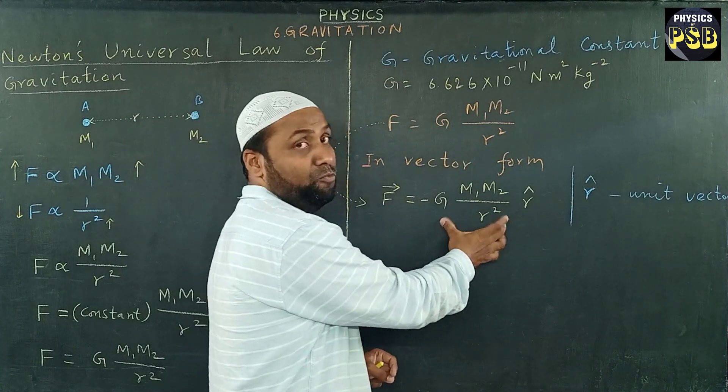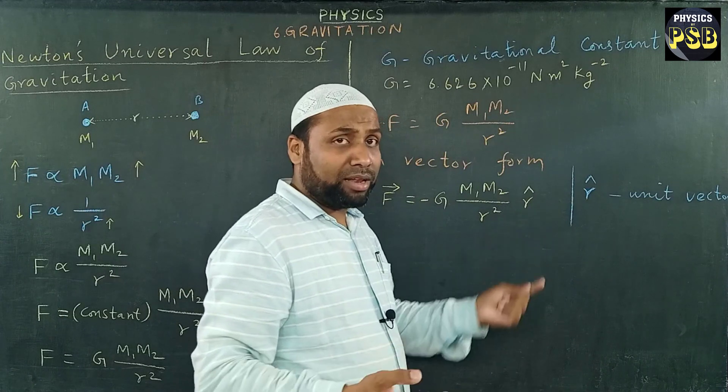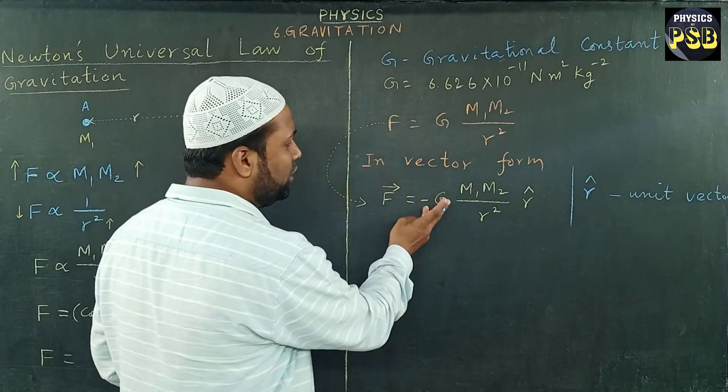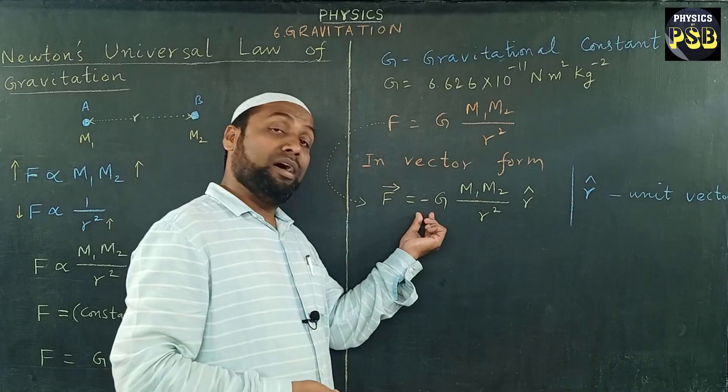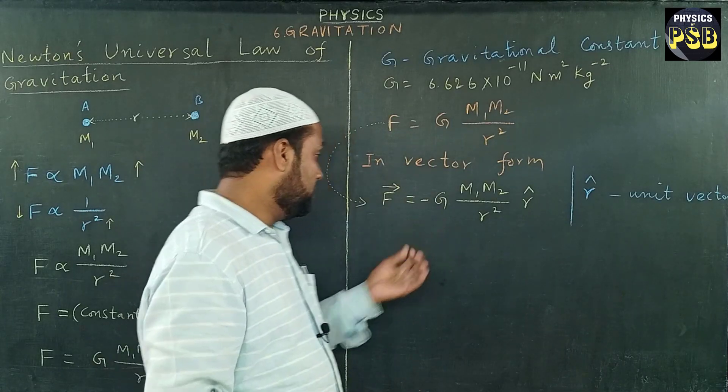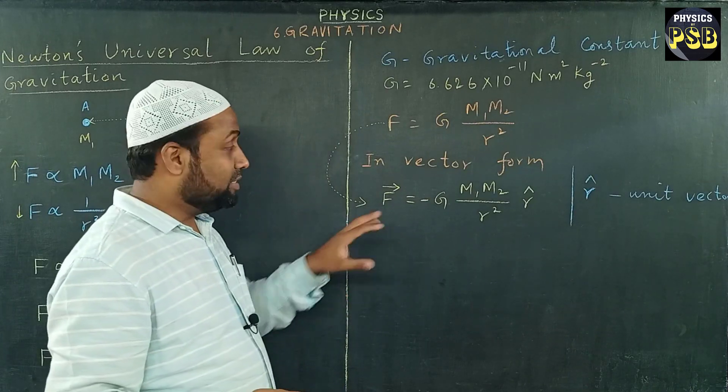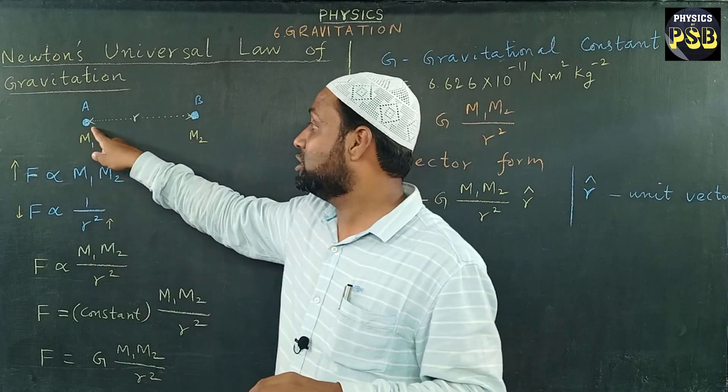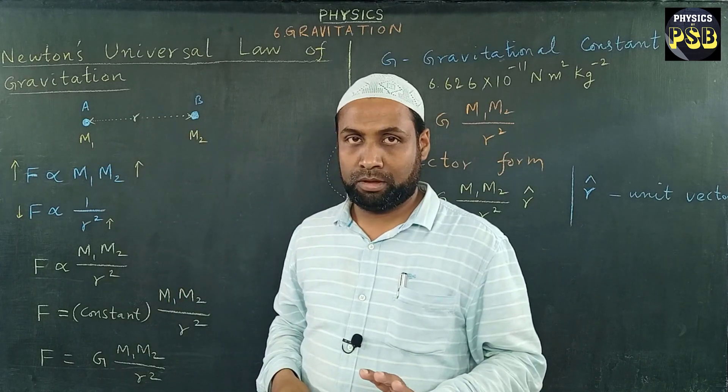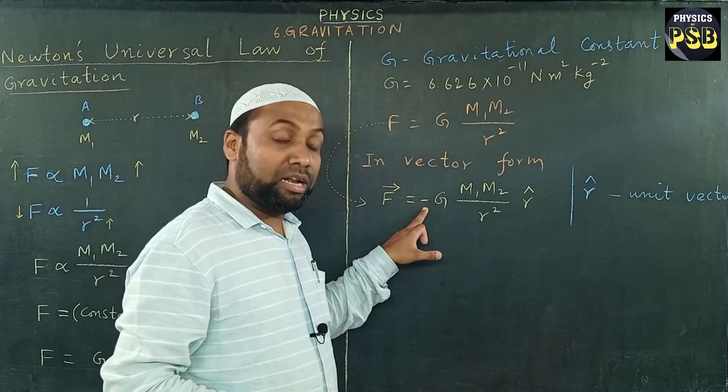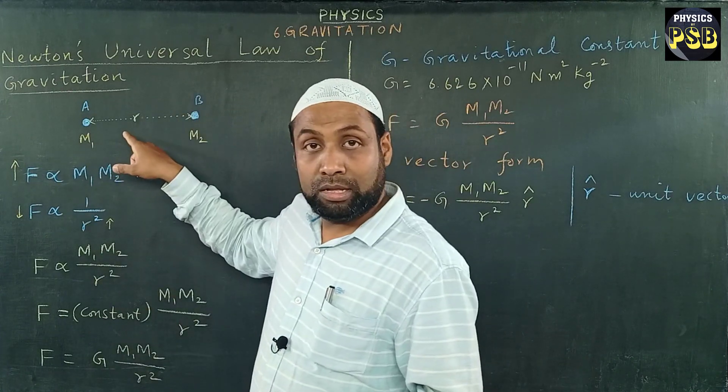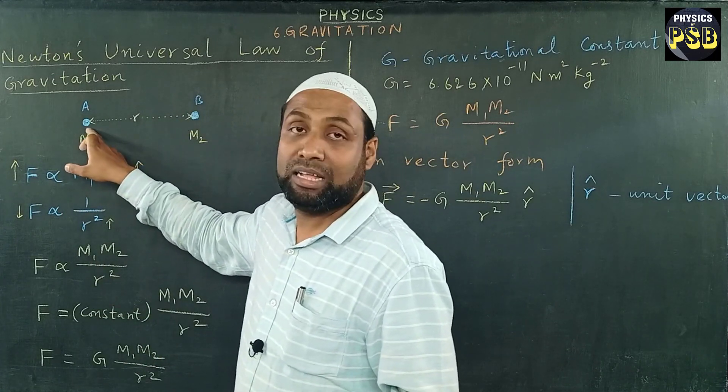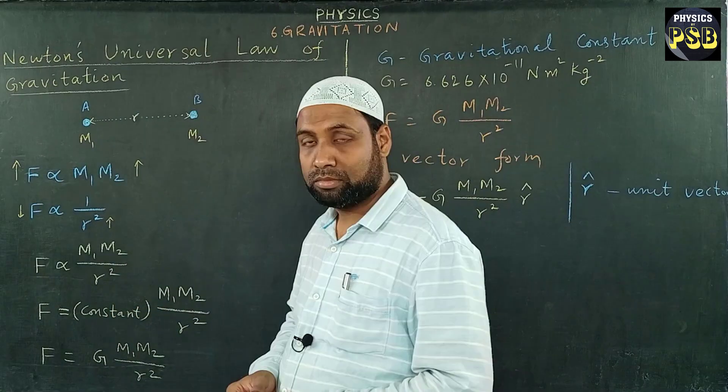When I multiply this term with 1, the value is not going to change. So what I will get? I will get a direction, but the value or magnitude will remain same. This is what we have done here. And why do we have minus sign here? This minus sign represents that the force, that is the gravitational force, is attractive in nature and it acts along the line which connects these two objects or bodies A and B.